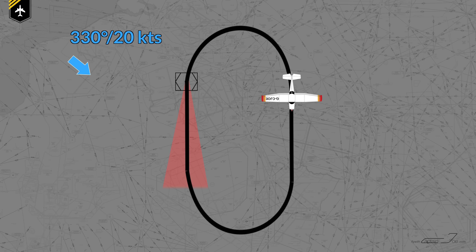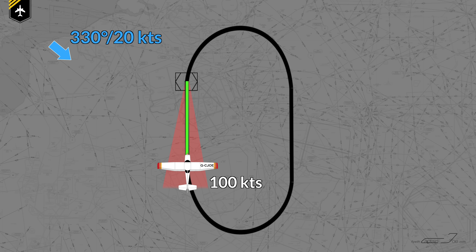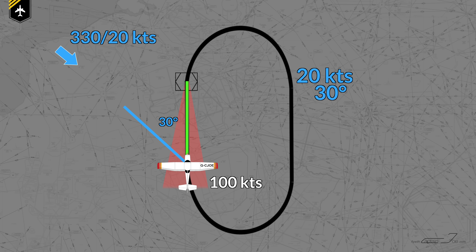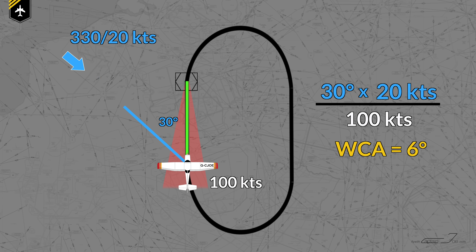As you fly 100 knots with your Cessna and want to navigate directly towards the holding fix at a track of 360, as you are on a radial 180 inbound, the wind blows with a 30 degree angle at you. The formula to use is: wind angle times wind speed divided by true airspeed gives you the wind correction angle you have to add or subtract to your heading in order to fly the desired track towards the VOR.